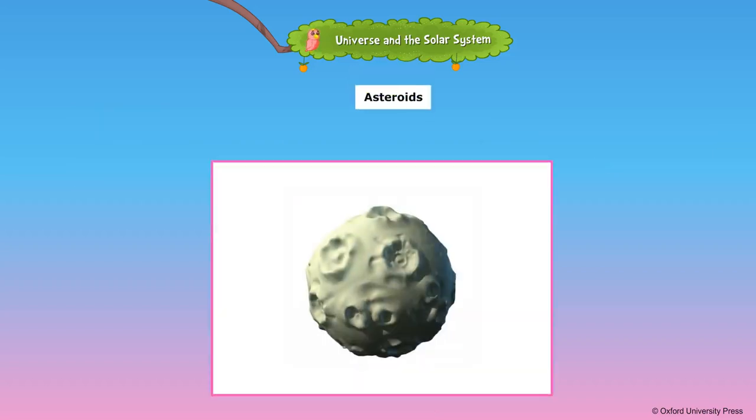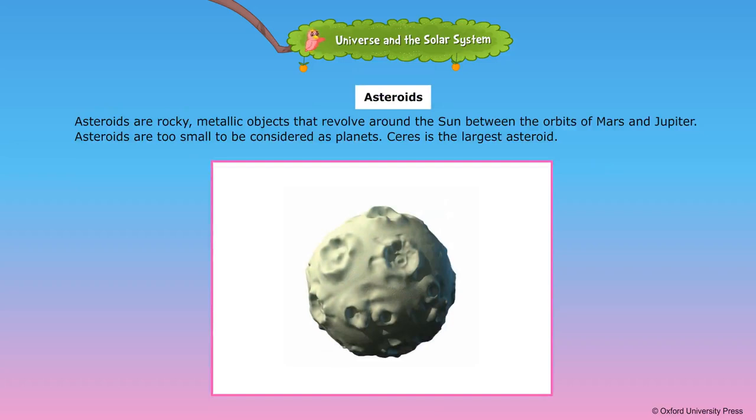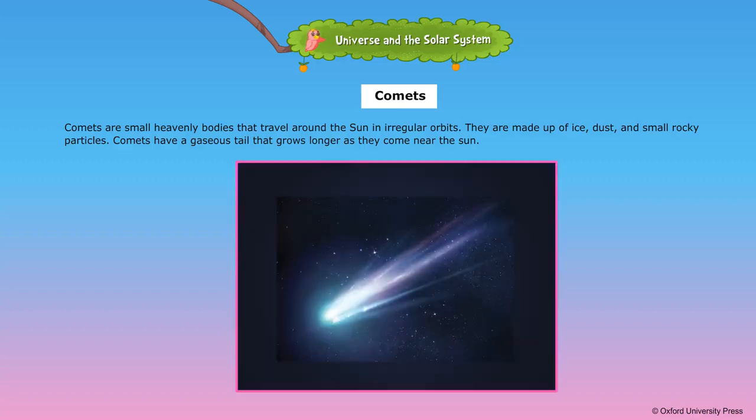Asteroids are rocky metallic objects that revolve around the sun between the orbits of Mars and Jupiter. Asteroids are too small to be considered as planets. Ceres is the largest asteroid.